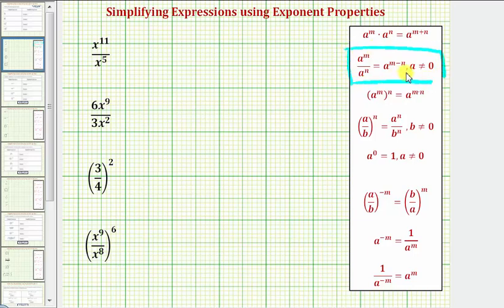where we'll be subtracting the exponents. Notice where m is equal to eleven, and n is equal to five. So x to the eleventh divided by x to the fifth is equal to x raised to the power of eleven minus five, which equals x to the sixth.